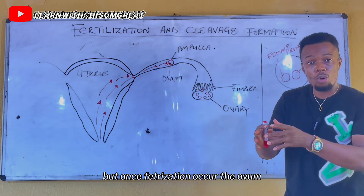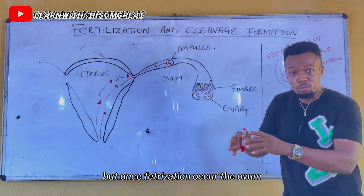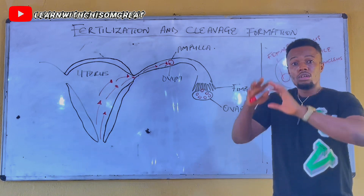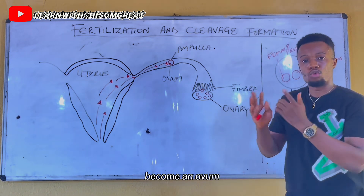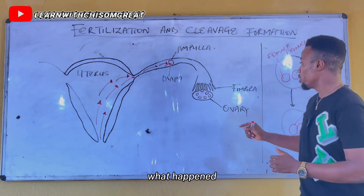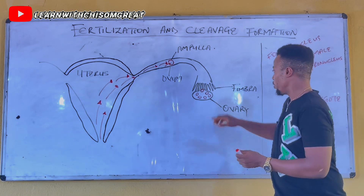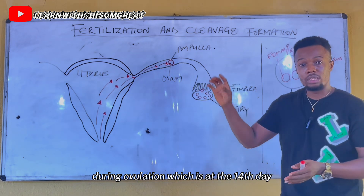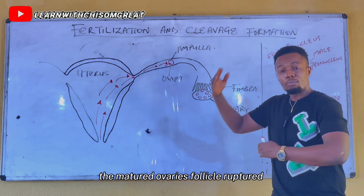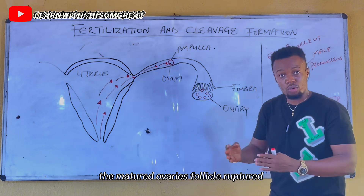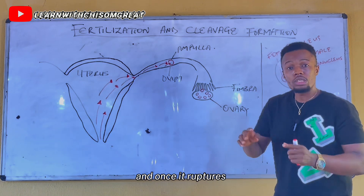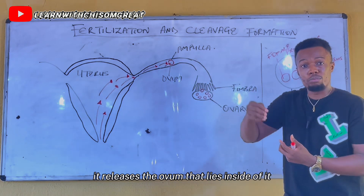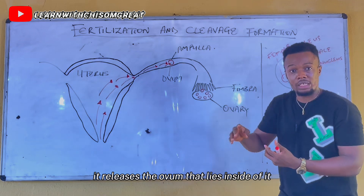Once fertilization occurs, the secondary oocyte that was arrested at the metaphase stage becomes an ovum. During ovulation, which is at the 14th day, the matured ovarian follicle ruptures and releases the ovum that lies inside of it.